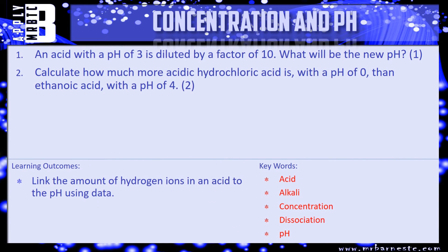Okay, let's have a look at a few questions then. So question one says: an acid with a pH of 3 is diluted by a factor of 10, what will be the new pH? So the key thing here is it says diluted, not concentrated. So this is going back up towards pH 7. What will be the pH? Have a go at that one.